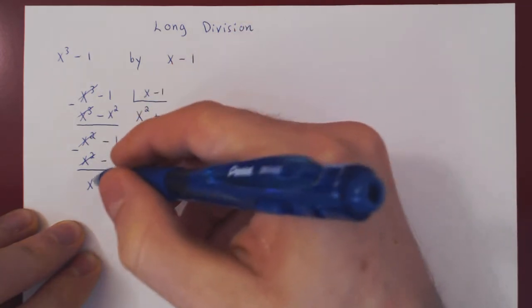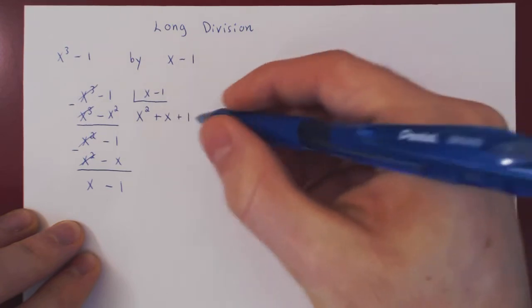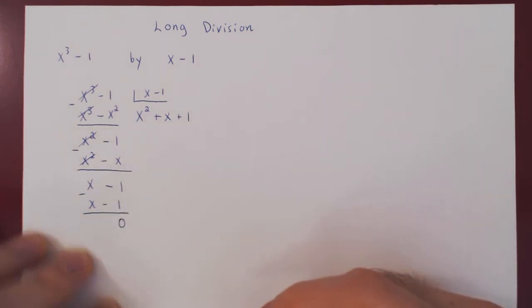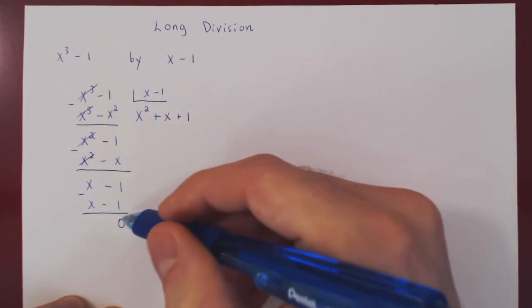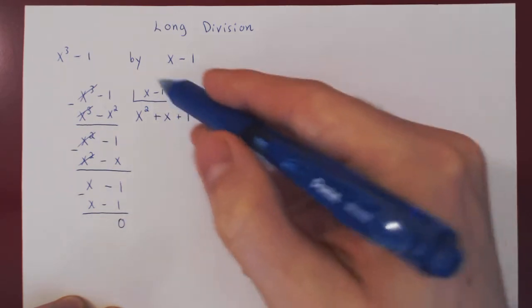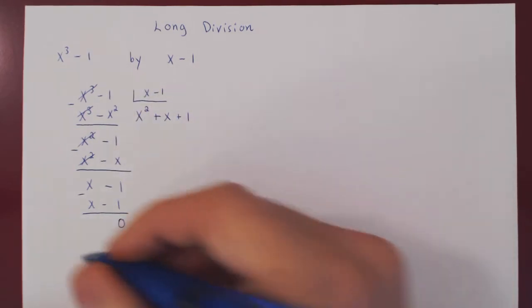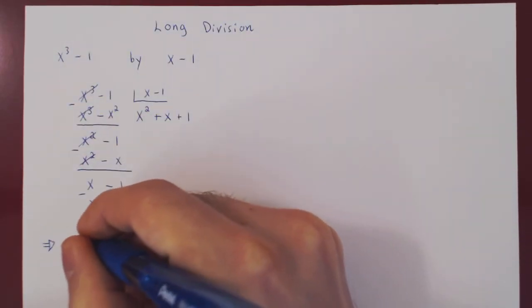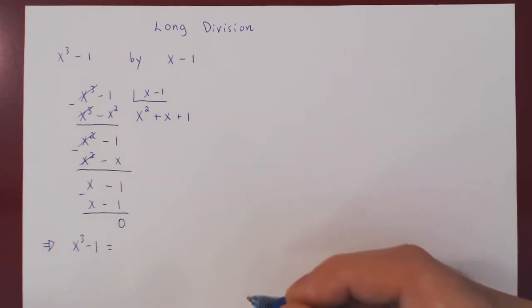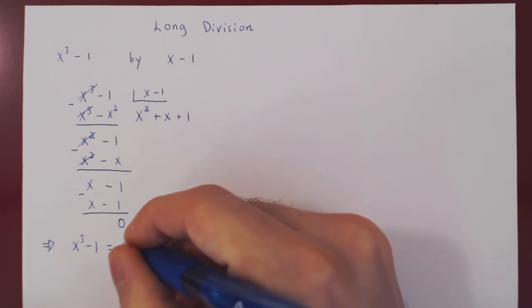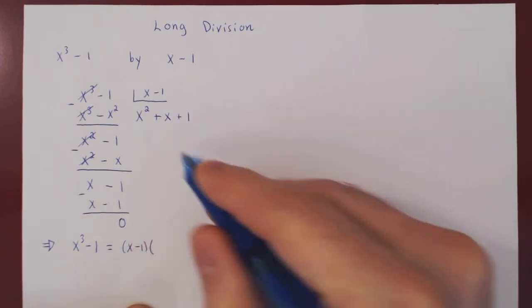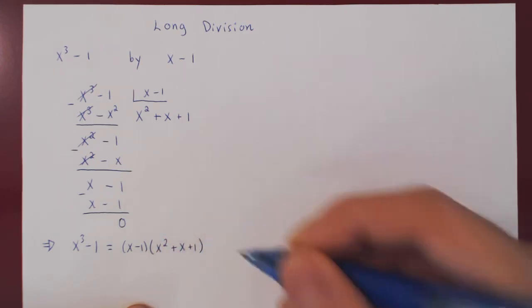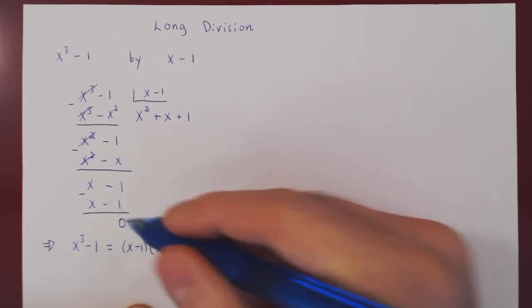One extra step: what times x gives us x? The answer is 1. 1 times x minus 1 gives x minus 1. We subtract and get 0. This is our remainder, and it signals that the long division is over. This implies that x cubed minus 1 equals x minus 1 times x squared plus x plus 1, with no remainder.